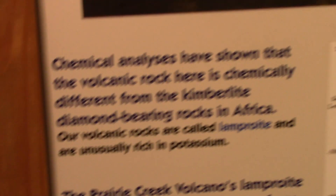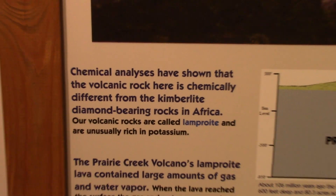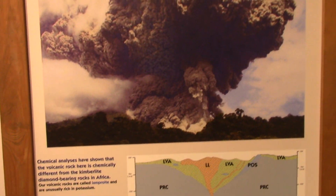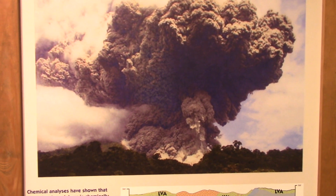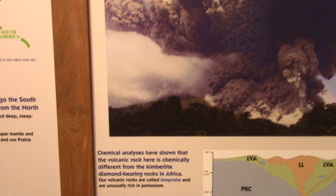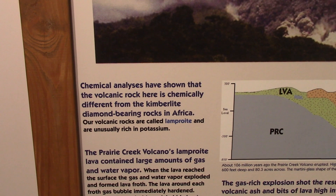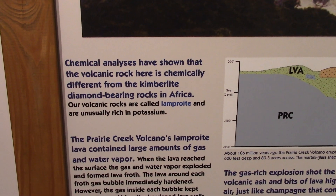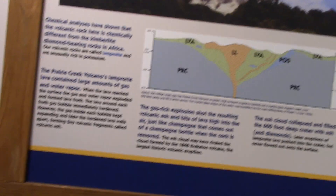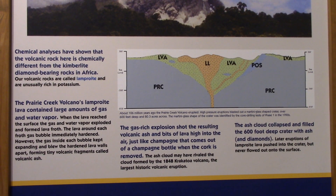Here at the Crater of Diamonds Museum in their visitor center, it says chemical analyses have shown that volcanic rock here at the Crater of Diamonds State Park is chemically different from kimberlite diamond-bearing rocks in Africa. Our volcanic rocks are called lamporite and are usually rich in potassium. Prairie Creek's volcano — that is the Crater of Diamonds — has always been known as a Prairie Creek intrusion. Prairie Creek's volcano's lamporite lava contained large amounts of gas and water vapor, exploded, and formed lava froth.